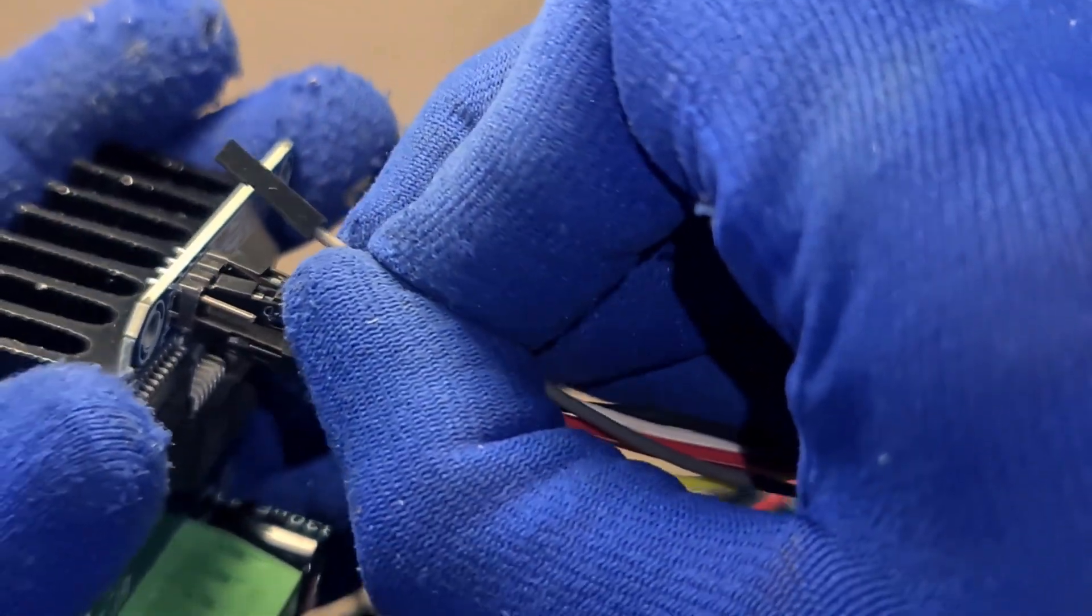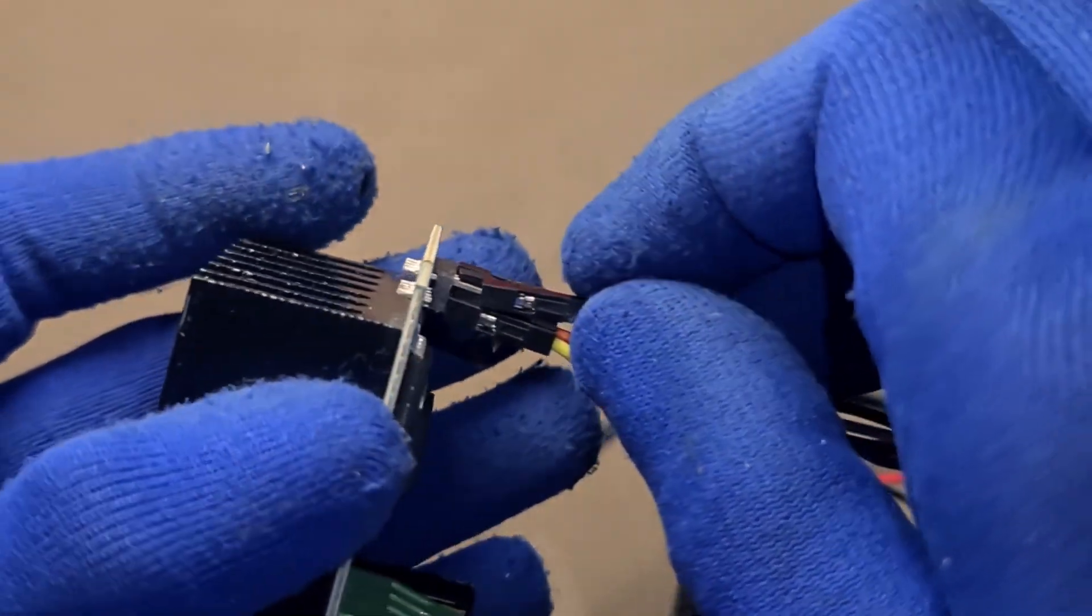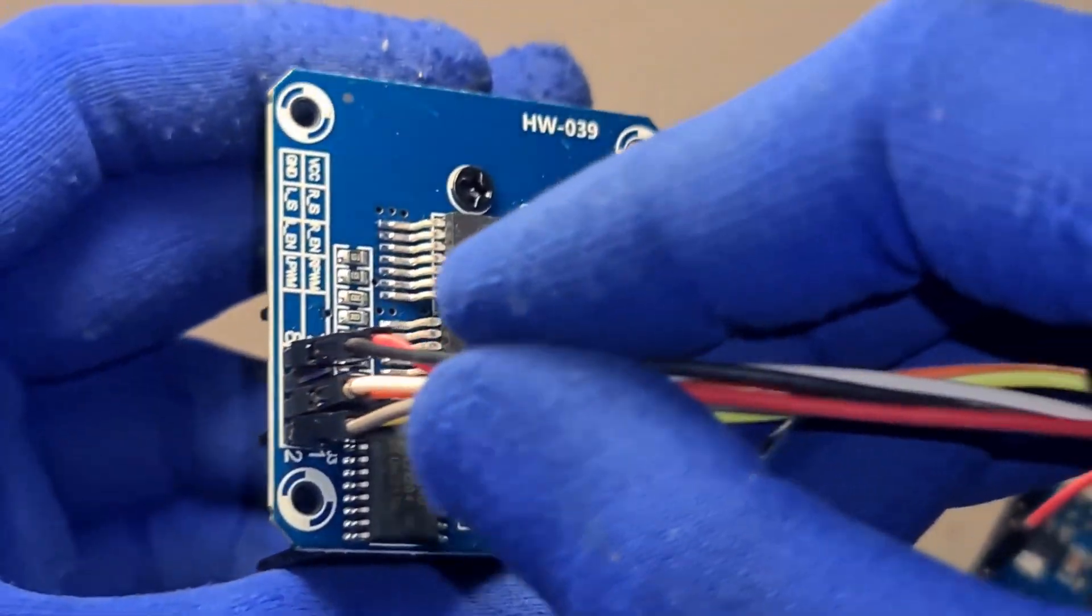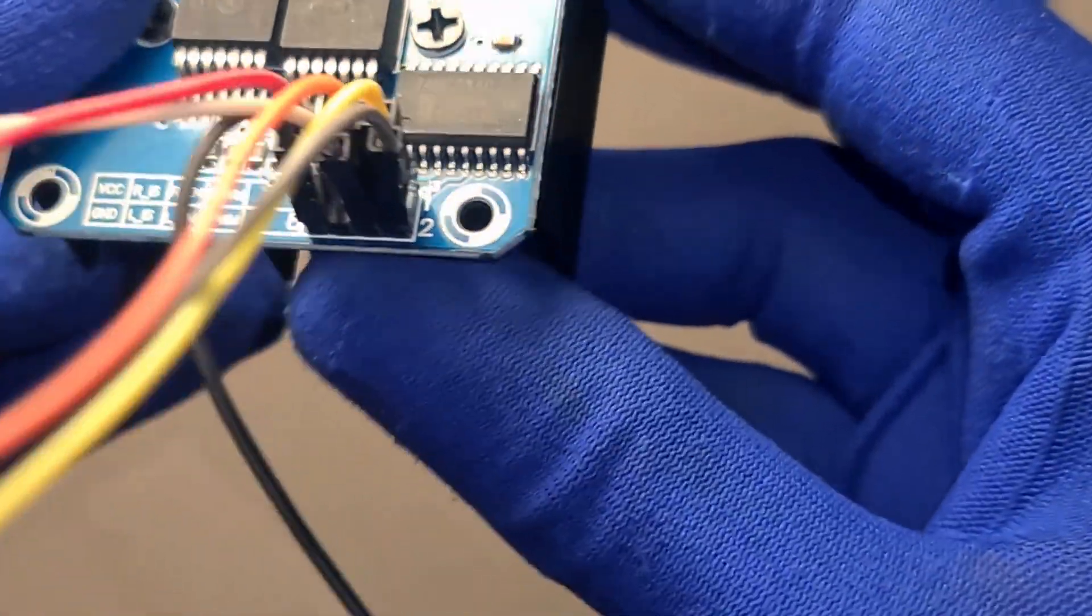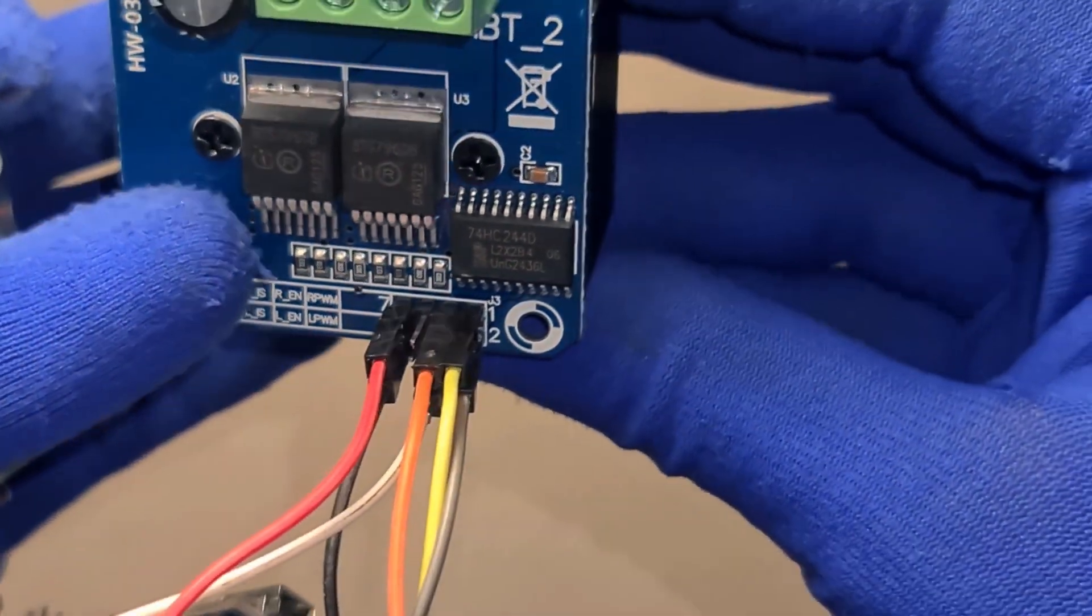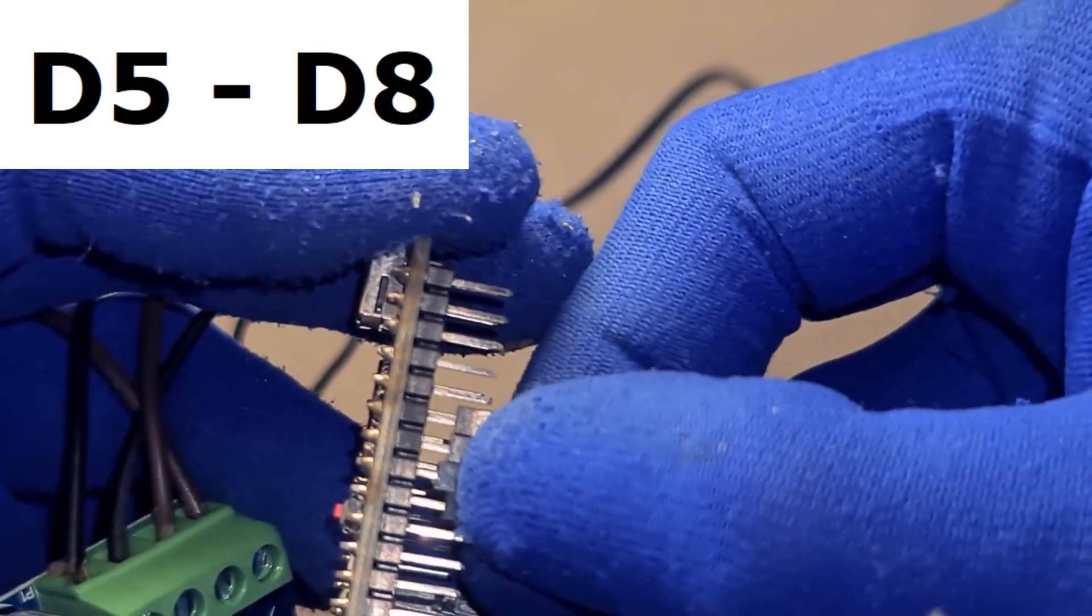So we'll connect the motor driver's control pins: R-EN, right enable; R-PWM, right PWM; L-EN, left enable; L-PWM, left PWM, to Arduino Nano's digital pins D5 through D8.